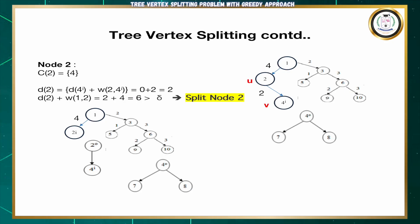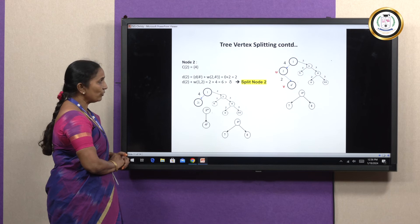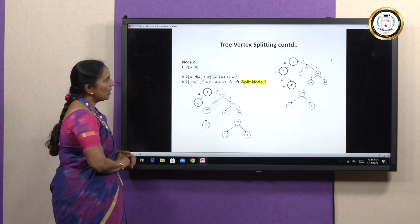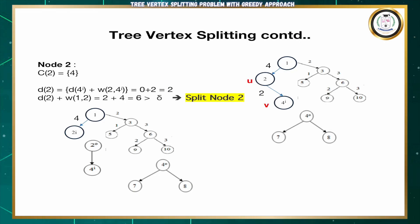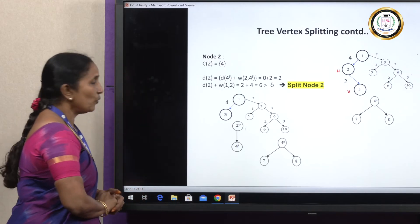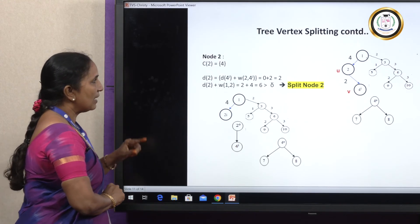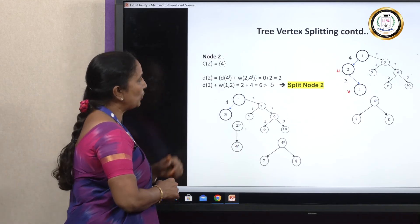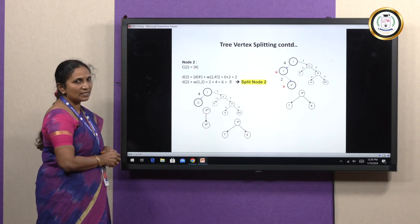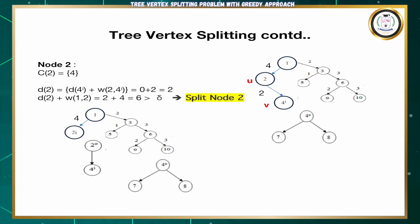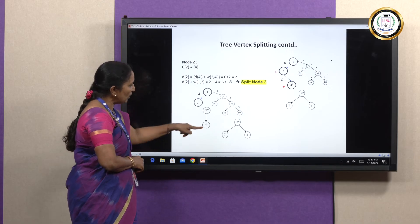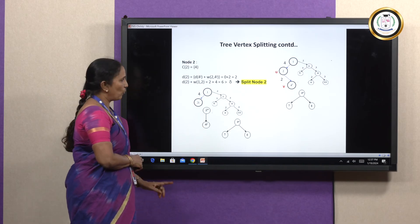Next, we need to split node 2. The delay for node 2 is the delay of node 4-in plus the weight from node 2 to node 4. Delay of node 4i = 0, plus weight from node 2 to node 4i = 2, so D(2) = 2. Now we need to see whether we need to split this node. D(2) plus the weight from node 1 to node 2 = 2 + 4 = 6, which is greater than delta = 5. So we need to split node 2 as well. From 2-out node, we are getting node 4-in, and node 2-in is connected with node 1. So the left-hand side is now complete.